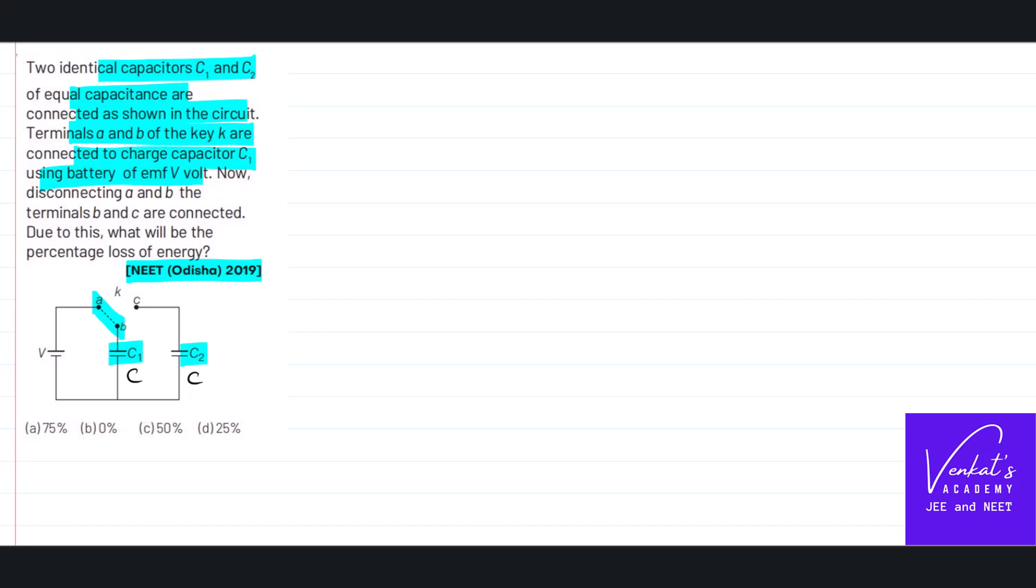Now this is moved. Instead of A and B, now B and C are connected in the second case. What will be the loss of energy in this case? So let us first talk about when terminals of A and B are connected, what happens.